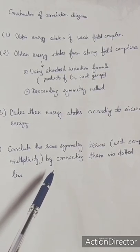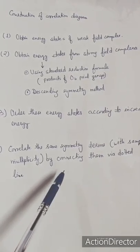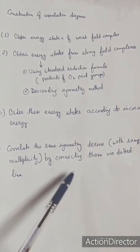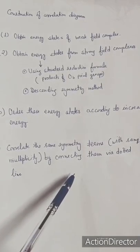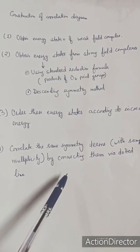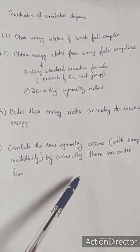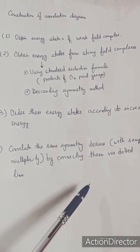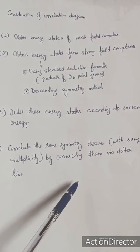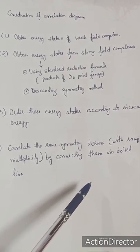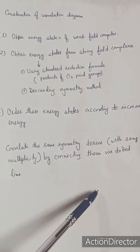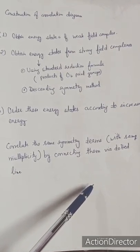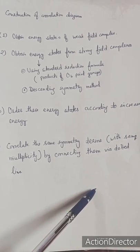In the next lecture we will discuss the construction of the correlation diagram for the D2 configuration, which is more difficult and complicated to draw. From that we will draw a conclusion regarding the non-crossing rule, which can be explained through the correlation diagram of the D2 configuration.